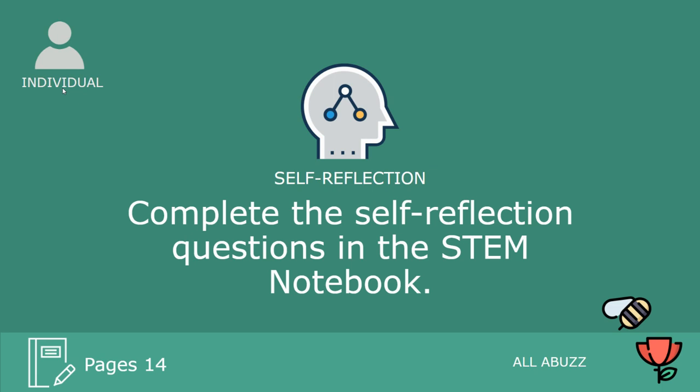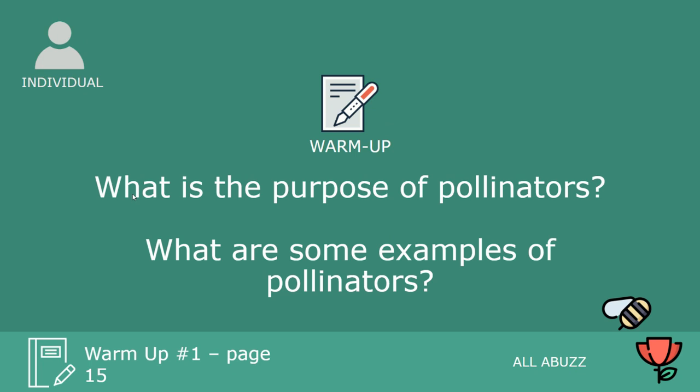Complete the self-reflection questions in the STEM notebook. Some people have asked how to do this — you can talk about it with your teammate and write down what you came up with together, or each write your own self-reflection. If doing it individually, put your name, a colon, your reflection, then your partner's name and their reflection. Either a group reflection or individual self-reflections works, since you may still have different thoughts even though you worked together as a team.